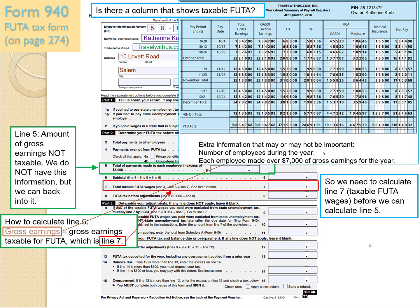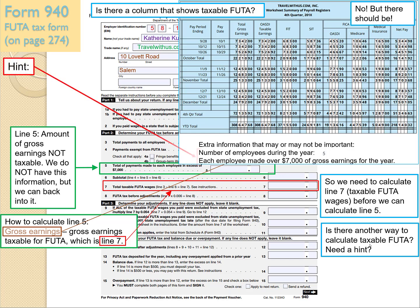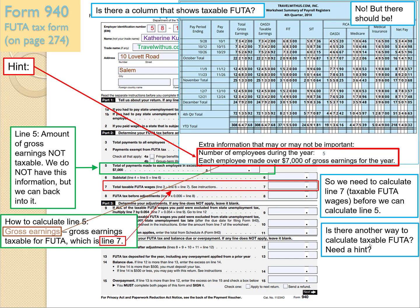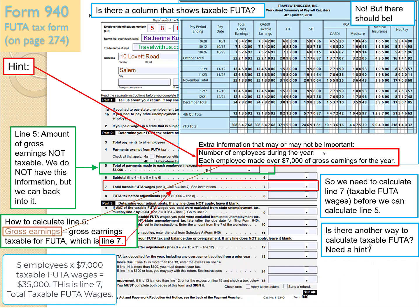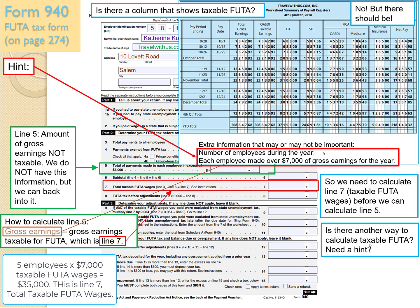On our worksheet, there's no handy column showing taxable FUTA, so we have to calculate it another way. Here's the key information: there were seven employees during the year, and each employee made over $7,000 of gross earnings. Therefore, they each have $7,000 taxable for FUTA. Seven employees times $7,000 taxable equals $35,000. So Line 7, total taxable FUTA wages, is $35,000.